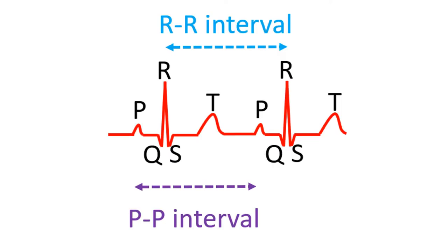Heart rate goes up when you exercise, so the maximum predicted heart rate during exercise is 220 minus the age of the person. The heart rate is measured in ECG from the interval between two consecutive R waves — it is actually the rate of the lower chambers or the ventricles. If the rate of the P waves is different from that of the R waves, it has to be measured separately from the PP interval.